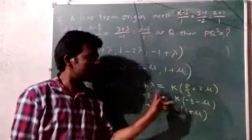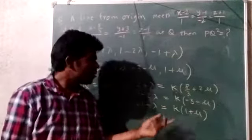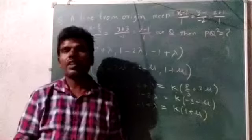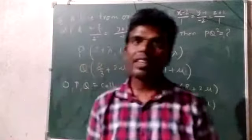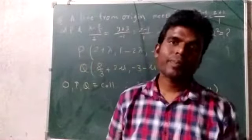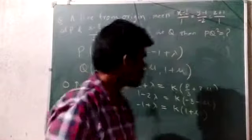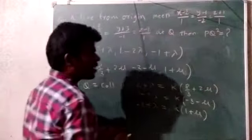Hence here, you can solve the relations. Now you need to solve lambda and mu. If you get P and Q, then obviously PQ squared will follow. So now we need to solve these equations.